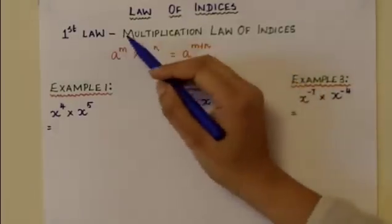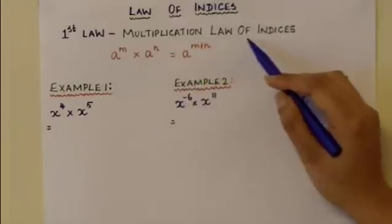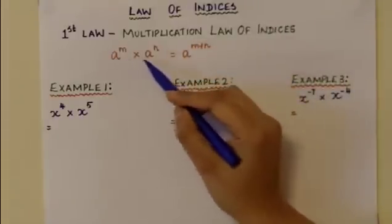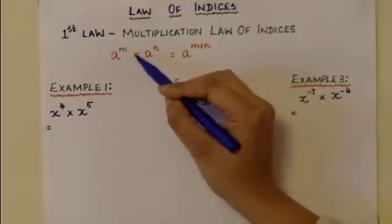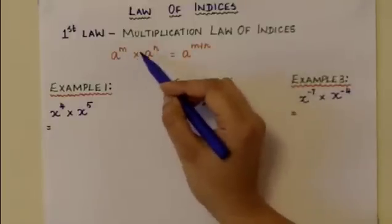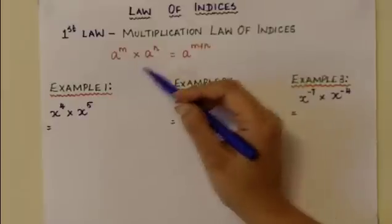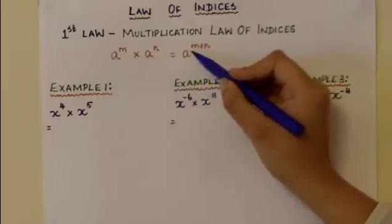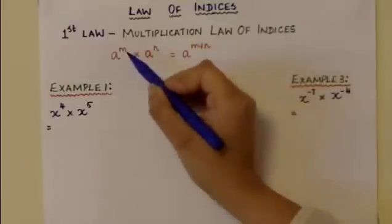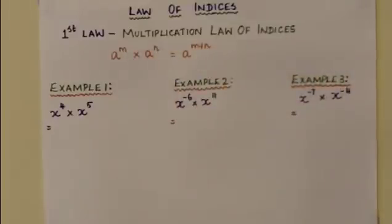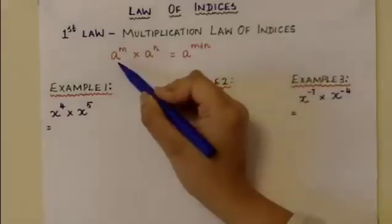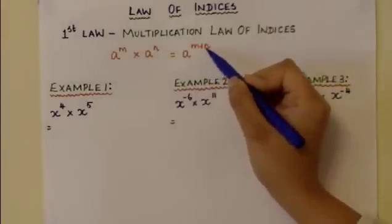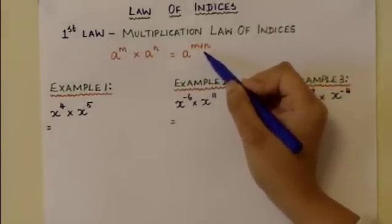Hi, this video is about the first law, which is the multiplication law of indices, according to which when the same variable is raised to different powers and multiplied together, the answer can be simplified as the variable to the power of the sum of those two powers. That is: a to the power of m times a to the power of n is equal to a to the power of m plus n.